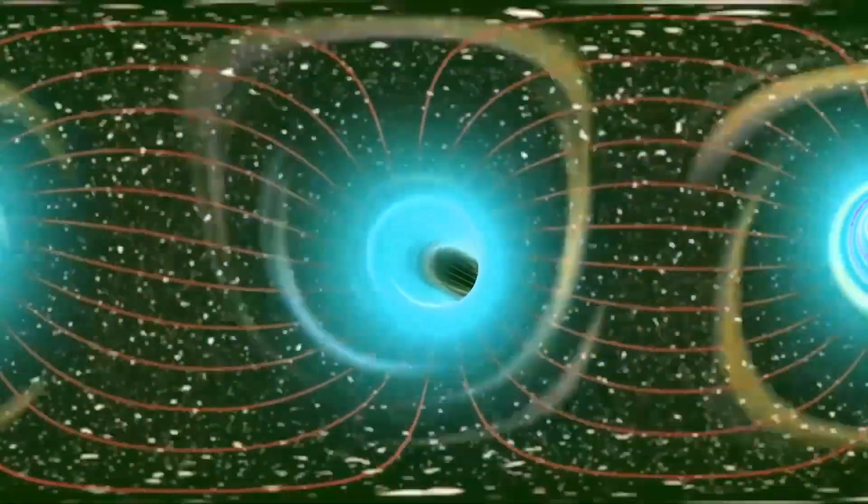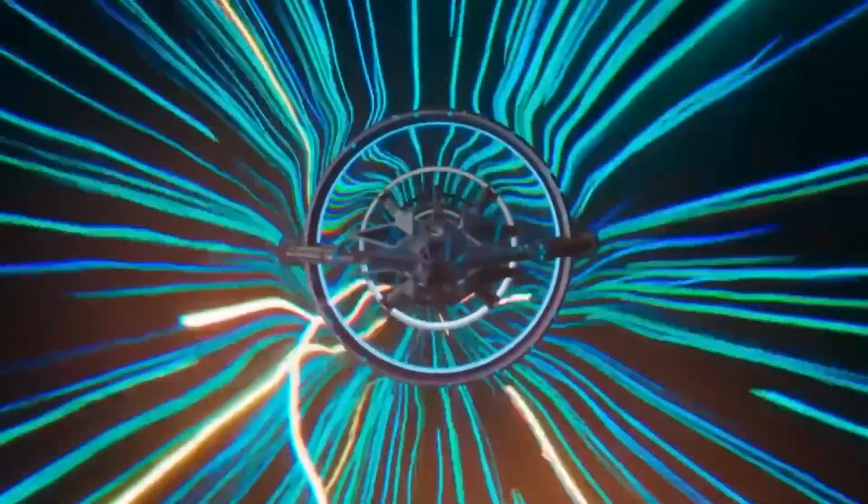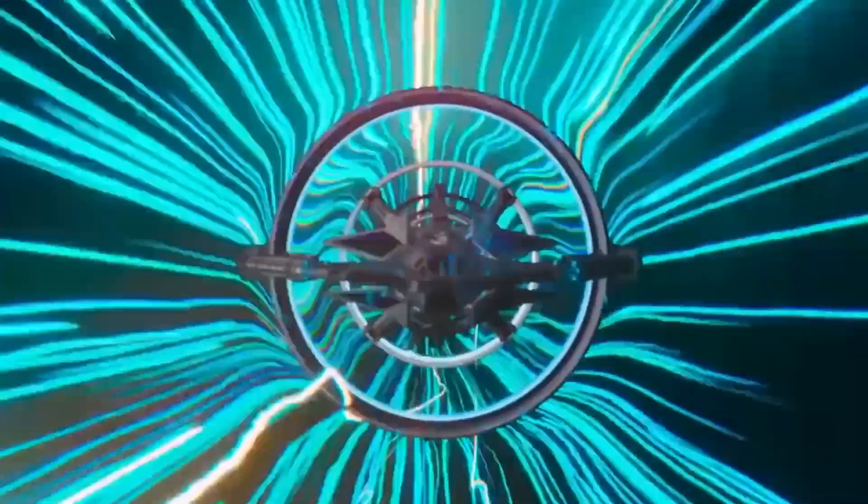This effect occurs with light too, due to the relative motion between the light source and the observer. If the light source moves away from the observer, the frequency will lessen, resulting in a shift towards the red end of the light spectrum. This is called a red shift, and the opposite applies with a blue shift.